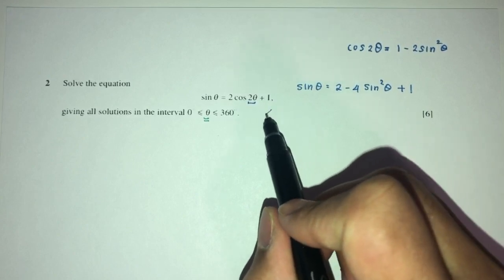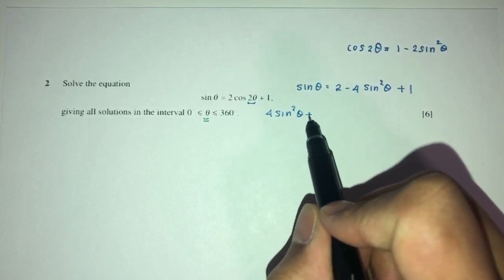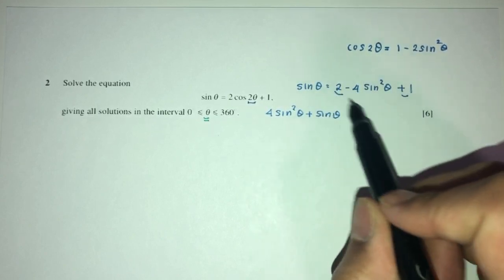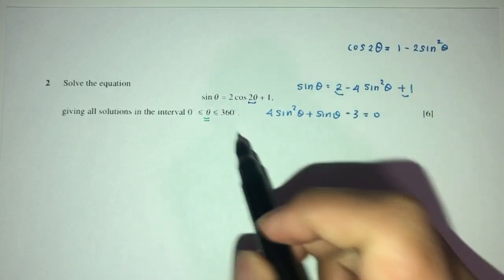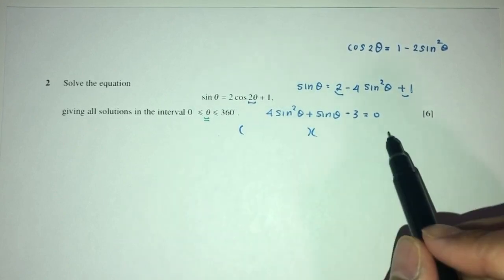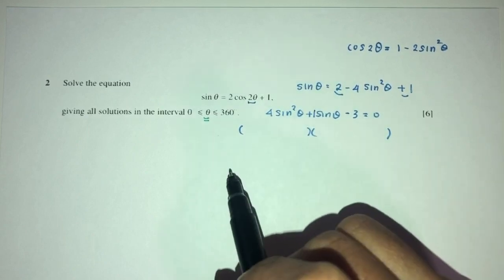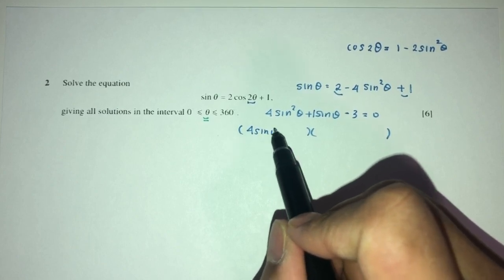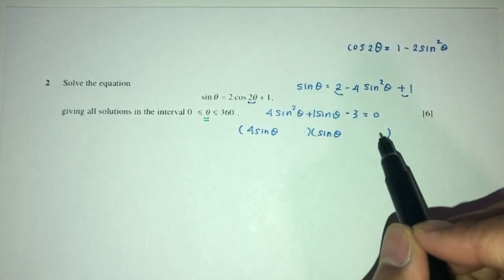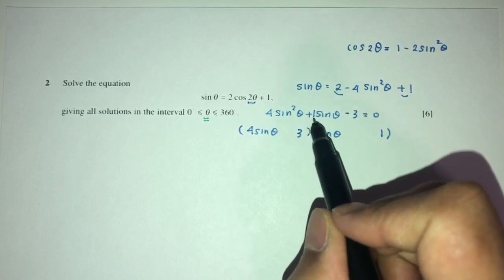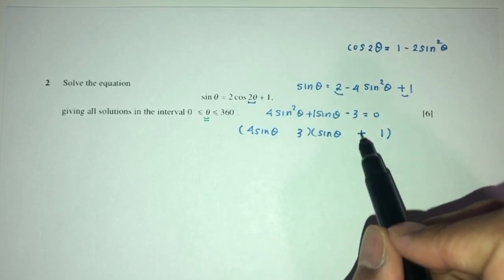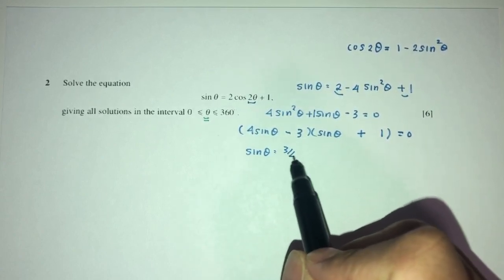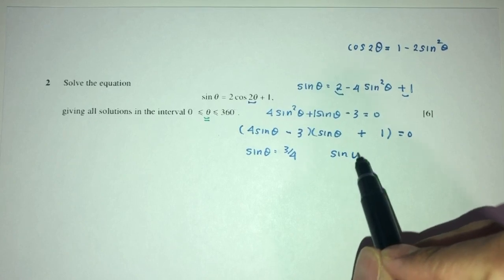Sending everything to one side: 4sin²θ + sin θ − 3 = 0. Factorizing, we need +4 − 3 to get +1, giving (4sin θ − 3)(sin θ + 1) = 0. So sin θ = 3/4 or sin θ = −1.